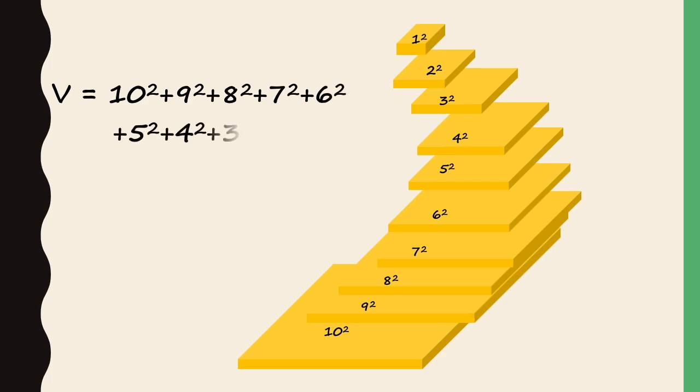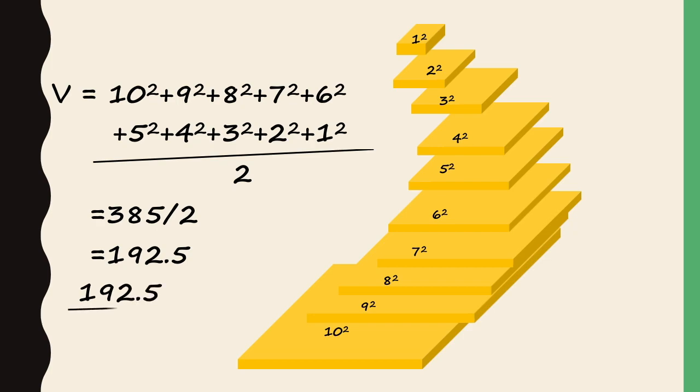And now we'll need to divide by 2, since for these slabs they'll only be half a unit high. And so in this case, we get 192.5 as our volume.